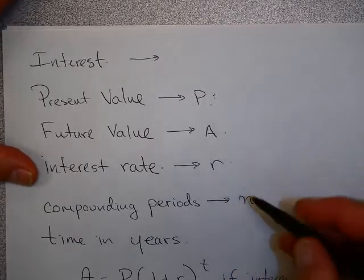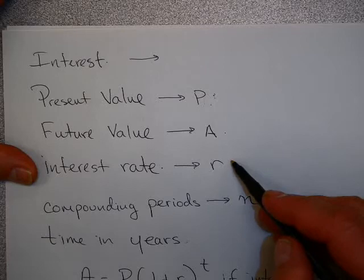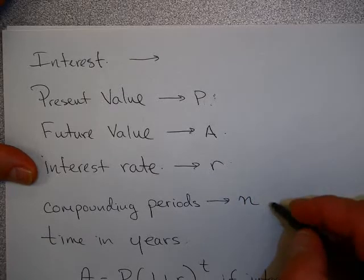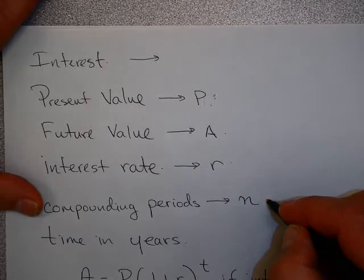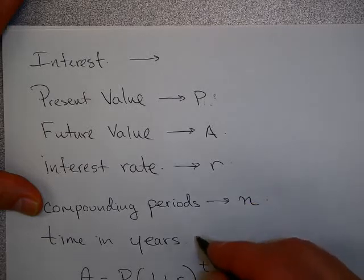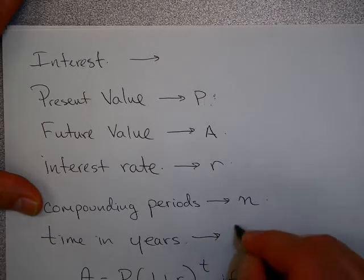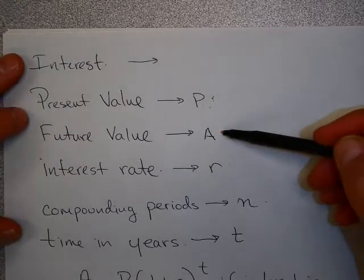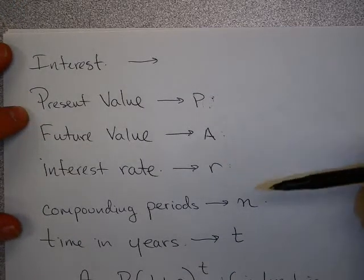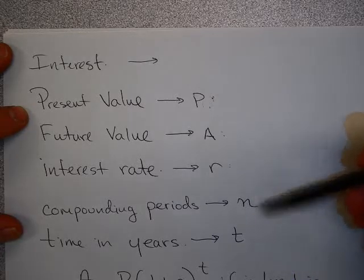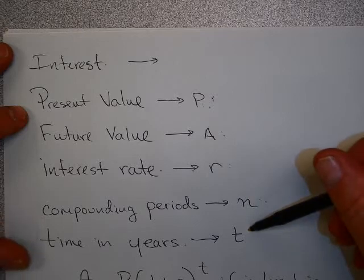Interest rate, we use the symbol r, is usually given as a yearly rate—how much you will earn per year. But sometimes interest is compounded more than one time a year, and in that case we call those compounding periods. Time is often given in years, and we use the symbol t for that. So P for present value, A for future value, r for interest rate, n for compounding periods—number of times interest is calculated—and t for years.